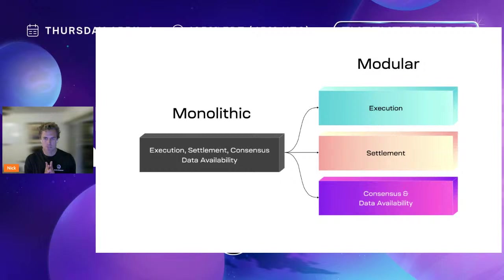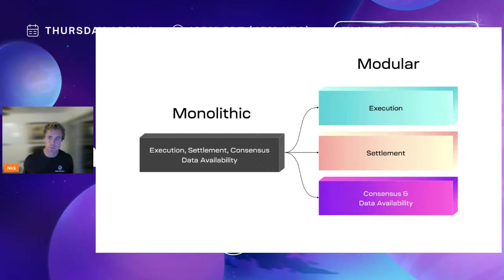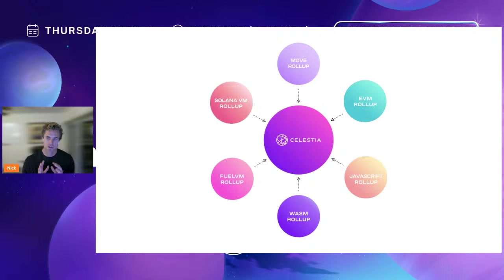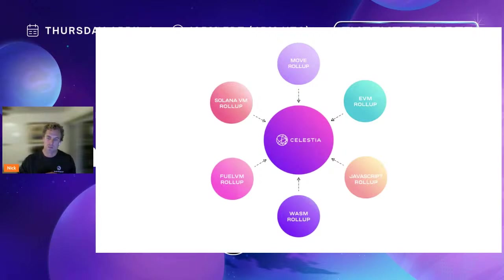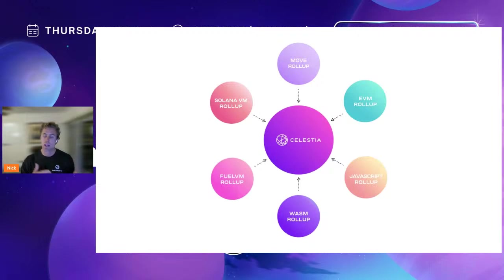The idea with modular blockchains is that even as there are more and more people using the network, fees can still stay relatively constant. Modular blockchains subvert this trade-off — you can have big blocks with low fees but still maintain high decentralization. The second part of the modular blockchain paradigm is that execution is separated from settlement, consensus, and data availability. As a developer, you're no longer locked into one operating system — you can choose what kind of operating system you want to run your program on.